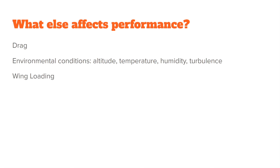Next we'll go into what else affects performance — we've covered parachute design itself and how it affects performance. In a later video, we'll talk about drag and how reducing it can improve performance, what happens when we change the jumping environment such as higher altitude, hotter or colder temperatures, humidity, and how turbulence affects parachute performance. We'll also discuss wing loading and what difference it makes to lightly versus heavily load a parachute. If you're interested, go watch that John LeBlanc video — it's very interesting to see how terms like rectangular versus elliptical versus semi-elliptical versus tapered are often just marketing speak and don't have a lot of bearing on today's sport parachutes.